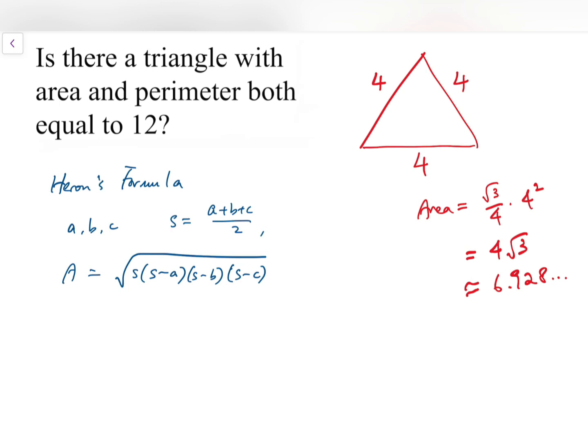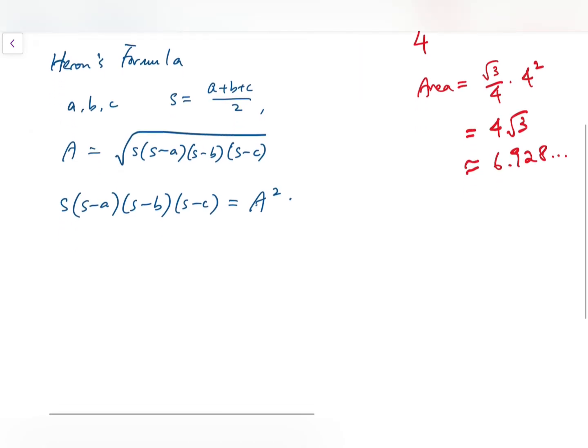So now the perimeter is fixed, and I want to try to maximize the area. Let me write it like this so I can remove the square root sign.